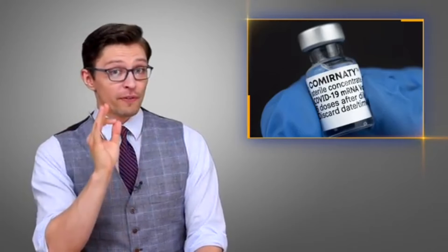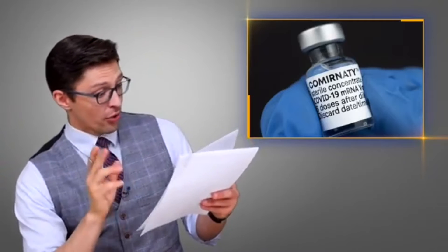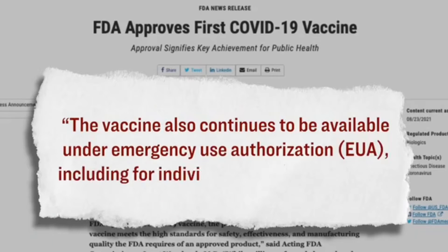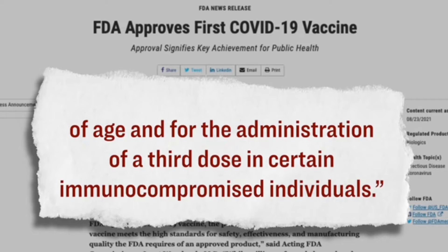However, do know that this full authorization is only for those who are 16 years of age or older. Here's what the FDA statement says about people who are under that age. Quote, the vaccine also continues to be available under emergency use authorization, including for individuals 12 through 15 years of age and for the administration of a third dose in certain immunocompromised individuals. And so what that means is that if you're between the ages of 12 and 15, or if you belong to the immunocompromised individual category and you're looking for a booster shot, this vaccine is still under emergency use authorization.